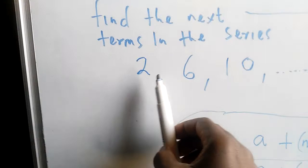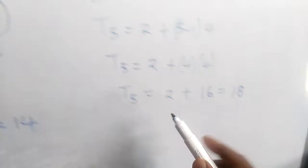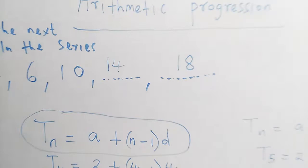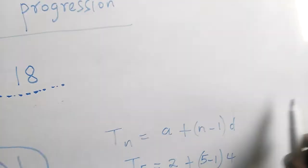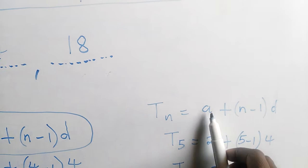So we know term number 4 is 14, and T of 5 is 18. We'll be solving questions like finding the term that you want. We can even find term number 50 — we'll say T of 50, and it will appear as 50 take away 1. You add your first number after you've multiplied by the common difference.